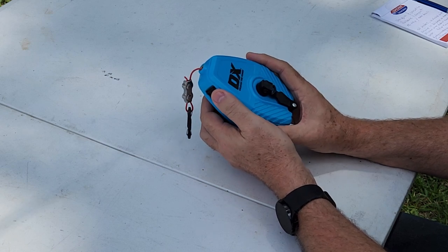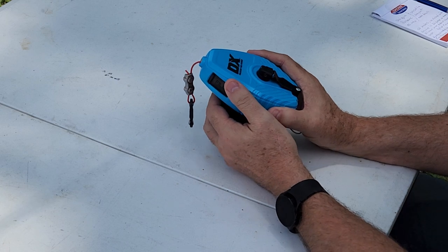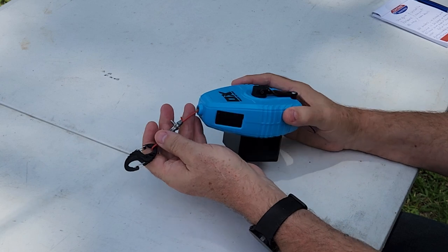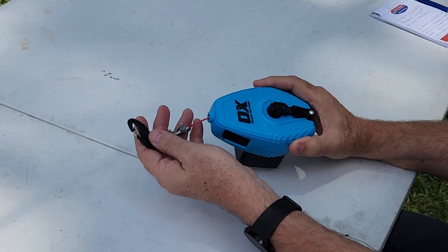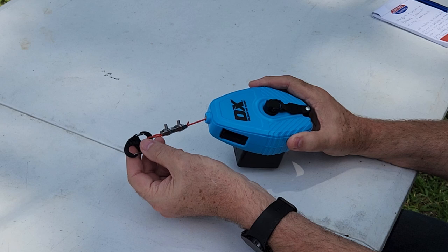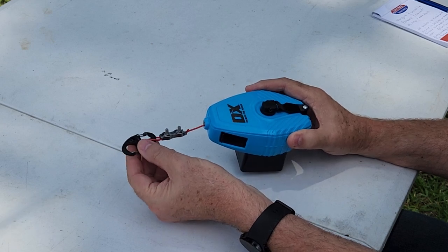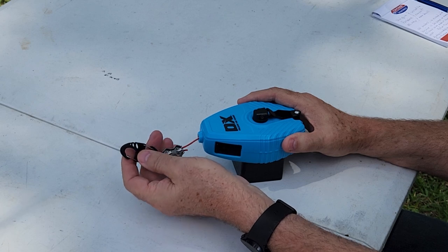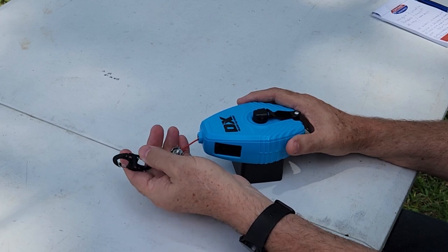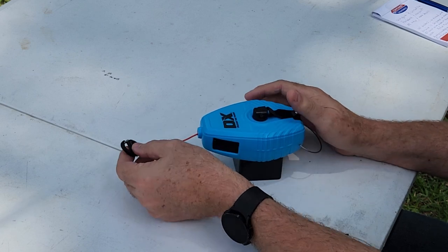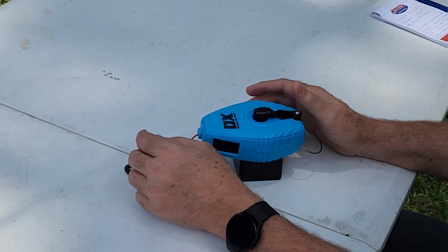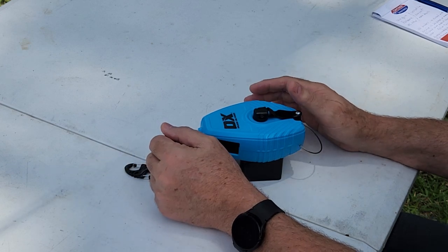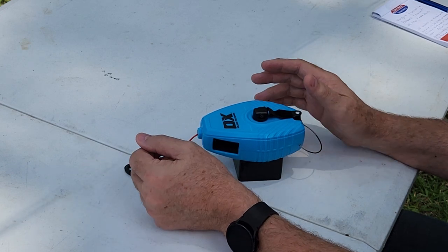It also allows for it to be used on six meters with no tuner. So the way we pre-tune these is when you pull the wire all the way out to where it stops, it is tuned for 20 meters, low part of the band, CW, FT8 portion is where it's tuned for. Now it will be good through the entire 20 meter band.